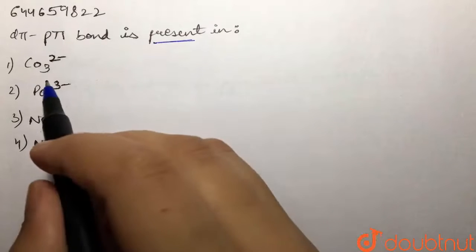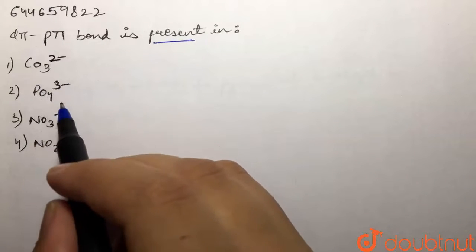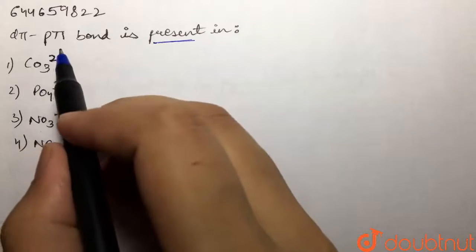We are given CO₃²⁻, PO₄³⁻, NO₃⁻, and NO₂⁻, and we are supposed to find out which has d-pi p-pi bond in it.